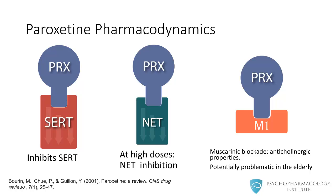The other property paroxetine has is its ability to block muscarinic receptors, which causes the drug to have anticholinergic properties. The importance of this in clinical practice is that central anticholinergic effects can trigger cognitive impairments in the elderly population.